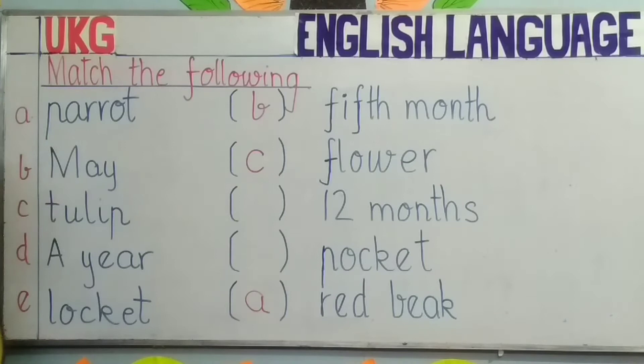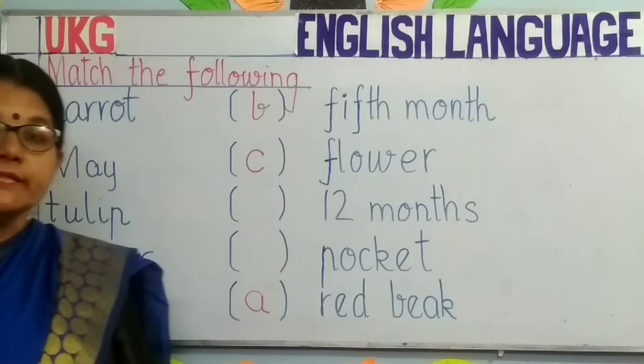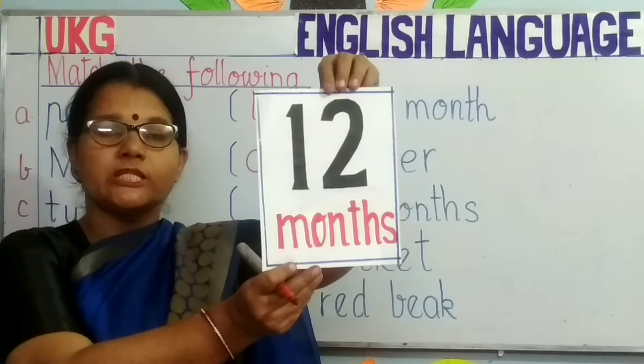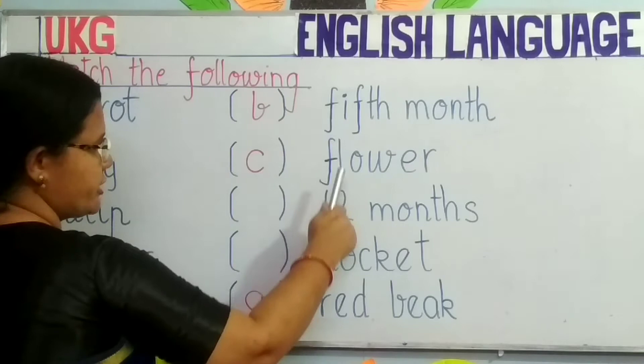Next line, D: a year. What is a year, children? You all have learned — there are 12 months in a year. Look at this: 12 months. A year has 12 months. So you will match a year with 12 months. Where is 12 months written? You will write D.